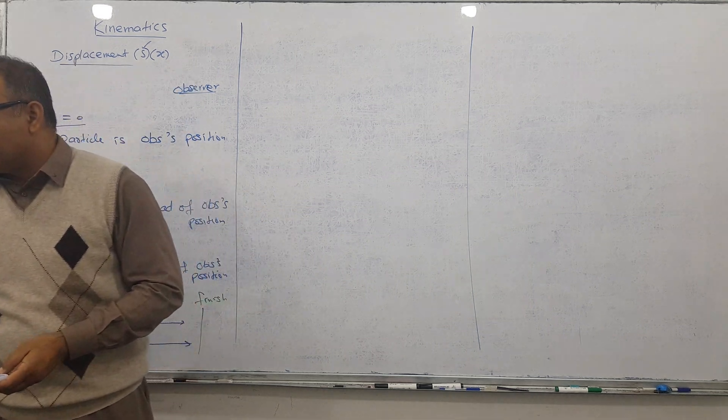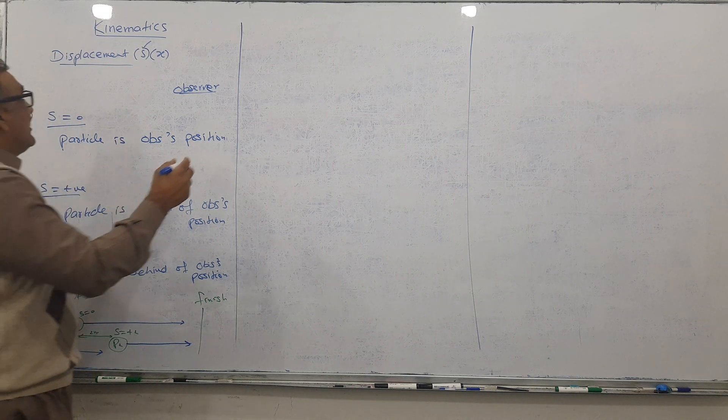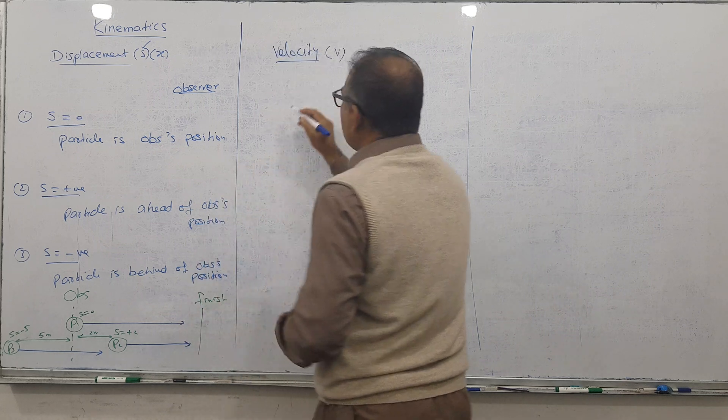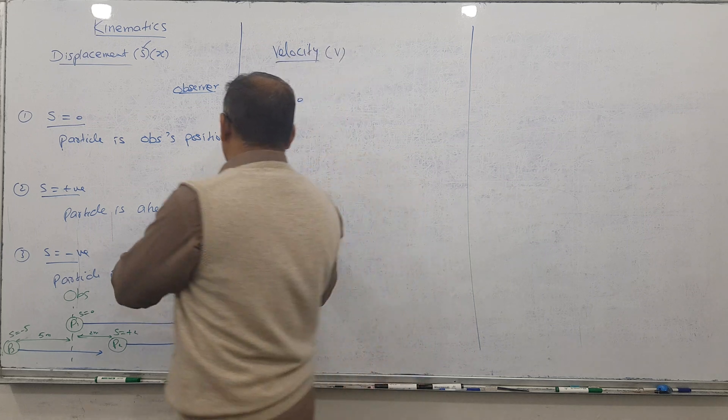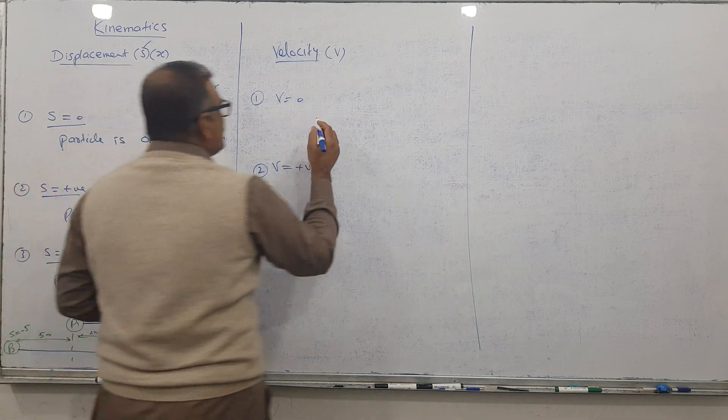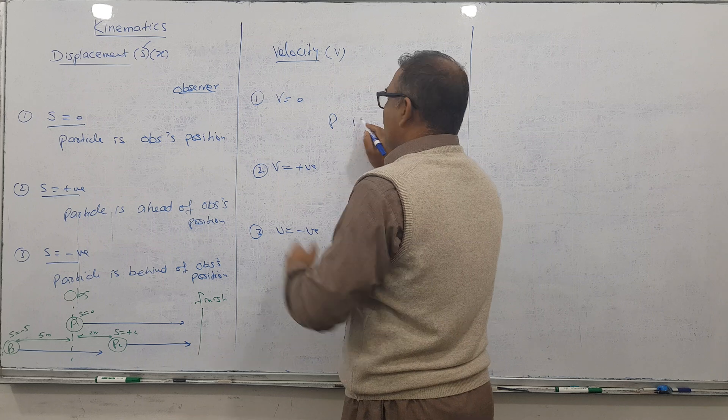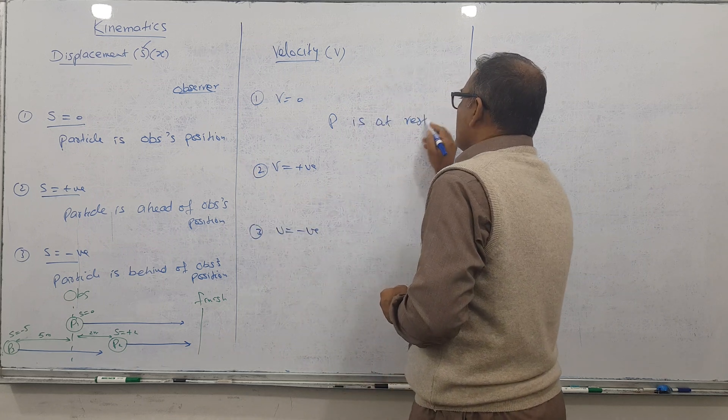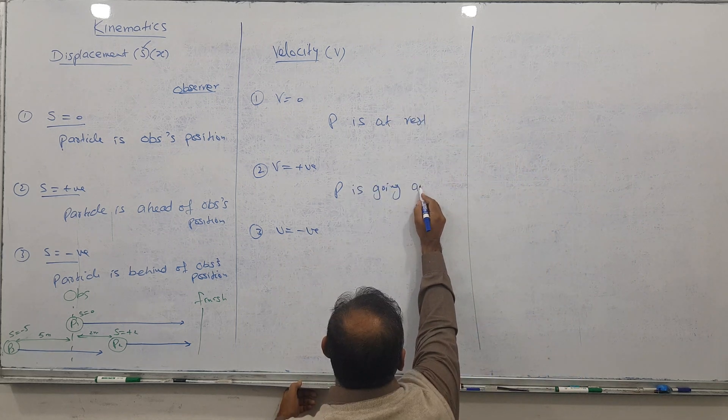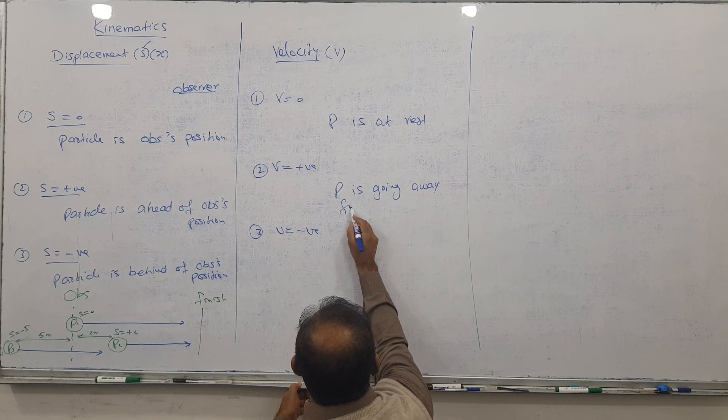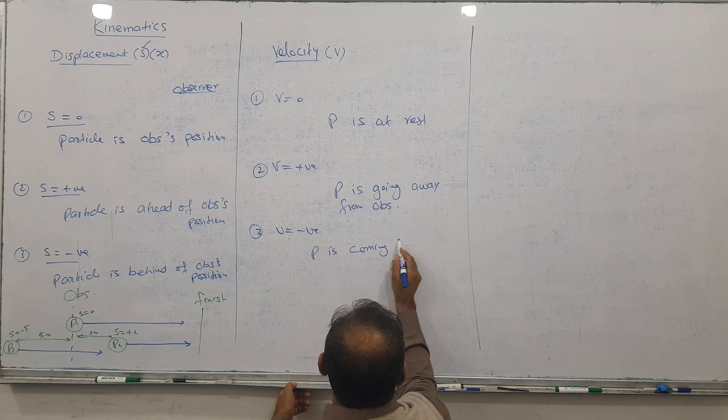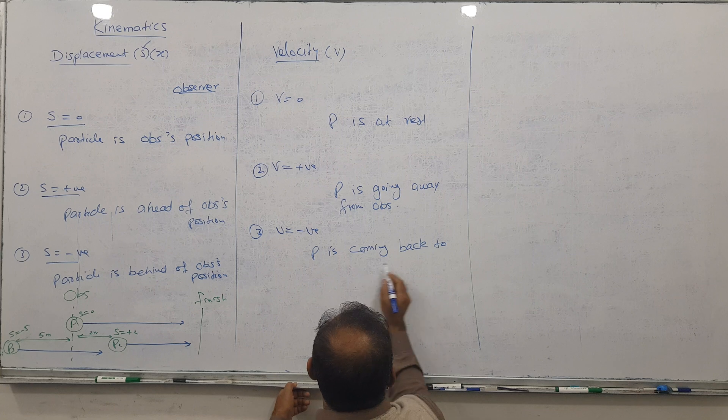Now let's talk about velocity. Velocity is represented by v, and we have three levels. Velocity zero, velocity positive, and velocity negative. When velocity is zero, P is at rest. When velocity is positive, P is going away from the observer. When velocity is negative, P is coming back to the observer.